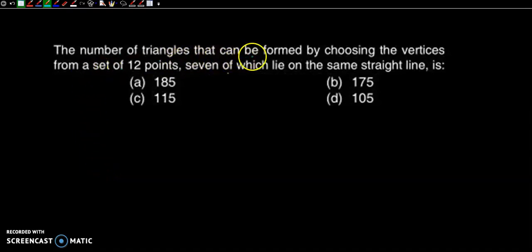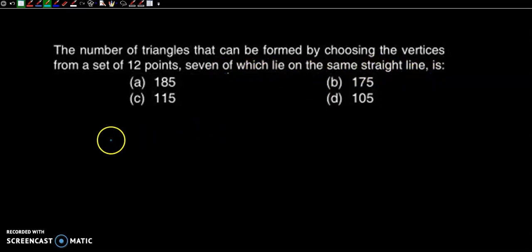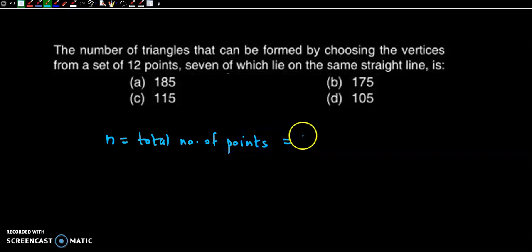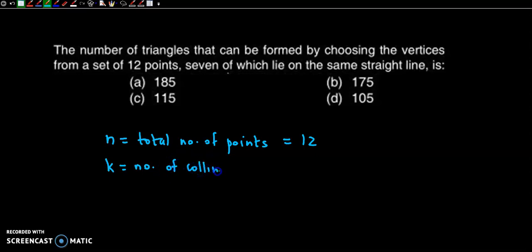The number of triangles that can be formed by choosing vertices from a set of 12 points, 7 of which lie on the same straight line. Here n is the total number of points, equal to 12, and k is the number of collinear points. We are given that 7 points are collinear.